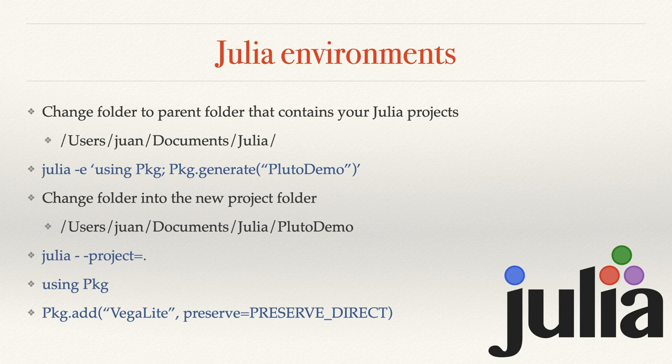Once we start Julia and go into the REPL, we use 'using PKG' and then PKG.add. There's a package, VegaLite, that we're going to use, then comma, preserve equals PRESERVE_DIRECT. The keyword 'preserve direct' means the version you install now will stick to that version. It becomes important in package development to control versions of dependencies, but for simple projects like this, I use preserve direct and it always keeps that original version of the package.